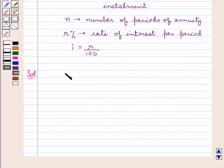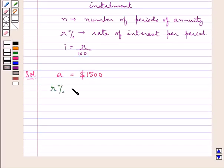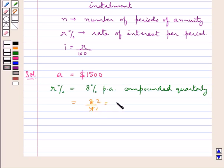In this case, we are given small a, the annual payment of each installment, as $1,500. R percent, the rate of interest, is 8% per annum compounded quarterly.